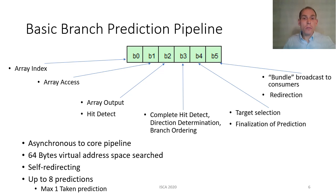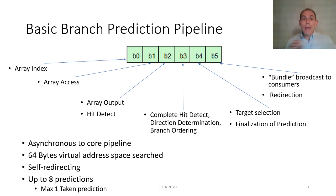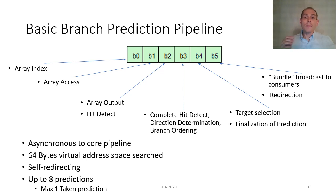When the iCache fetches a maximum of 32 bytes of virtual address space per cycle, the branch predictor searches a 64-byte address space each cycle. The branch prediction pipeline searches sequential 64-byte blocks until a taken branch is encountered, at which point the pipeline self-redirects to the target of the branch where searching continues. At the end of each six-cycle pipeline, if branches are found within the 64-byte address space, a prediction bundle is made with up to eight branches per bundle, but a maximum of only one taken prediction. The branch predictor uses a stream to keep track of where it is in relation to the last pipeline restart. Streams start at zero with a restart and increment upon each taken prediction found. A double quad word count is maintained to know how many 32-byte chunks the predictor has searched within the current stream.